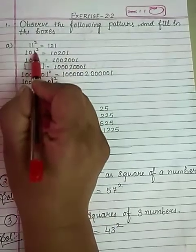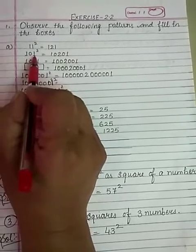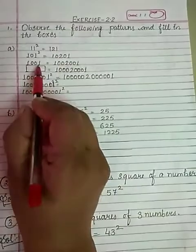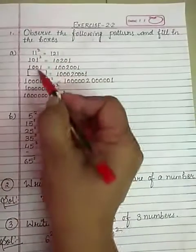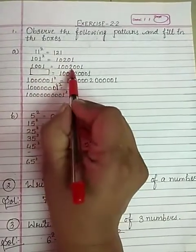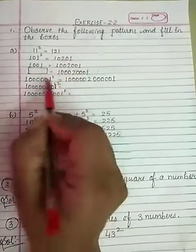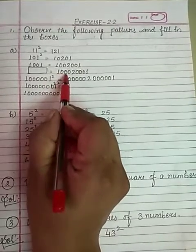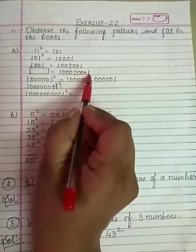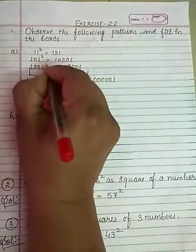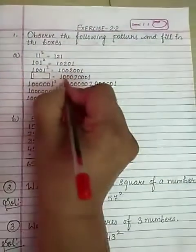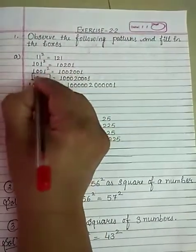101 whole square means 101 multiplied by itself — the answer is 10201. No need to multiply, just follow this pattern: 1, zero, zero, 2, zero, zero, 1. Same pattern applies. Which number is being squared here? One followed by three zeros — use this pattern.